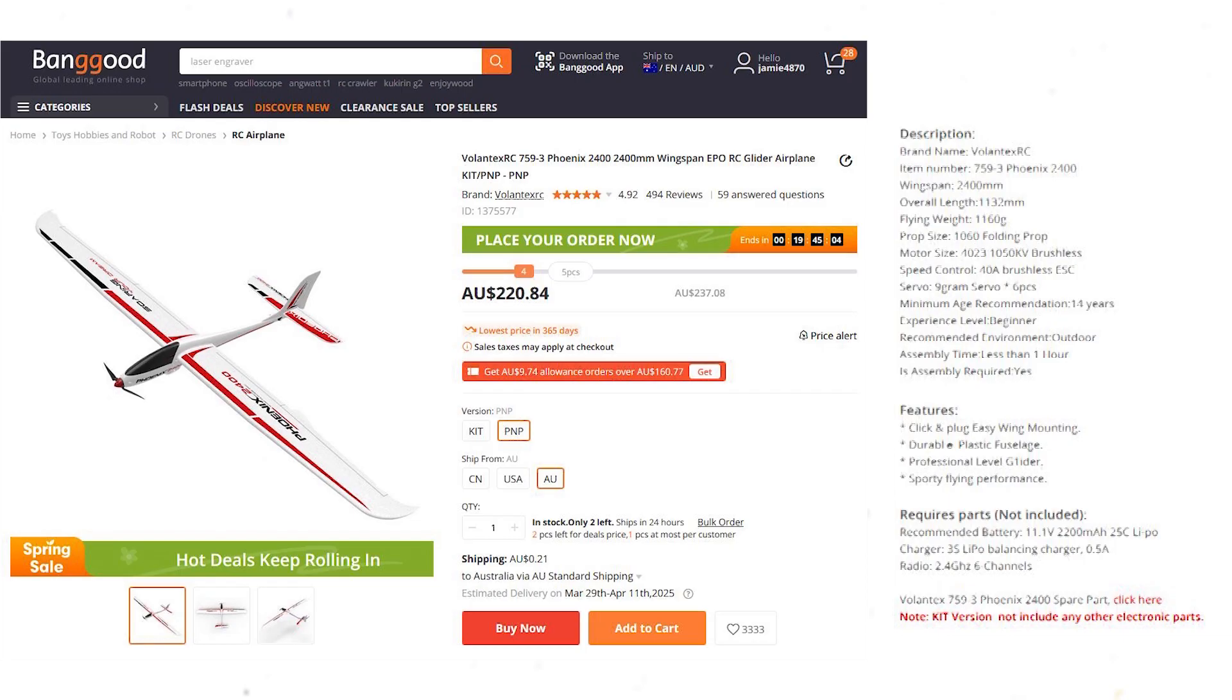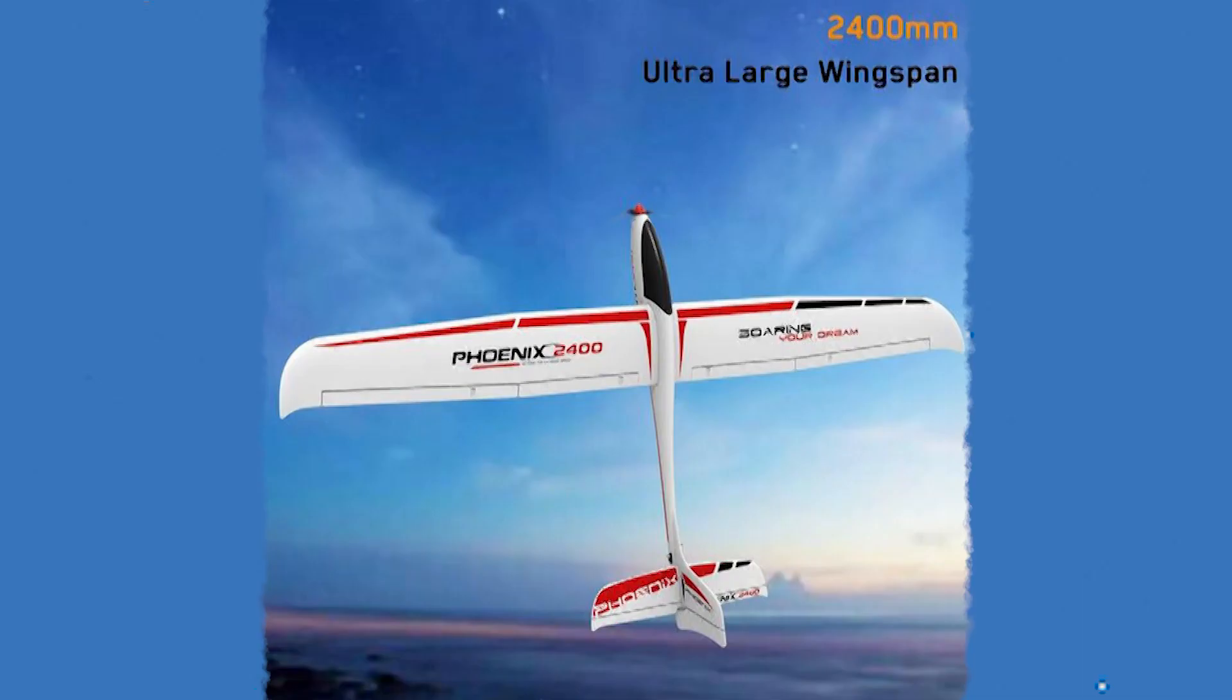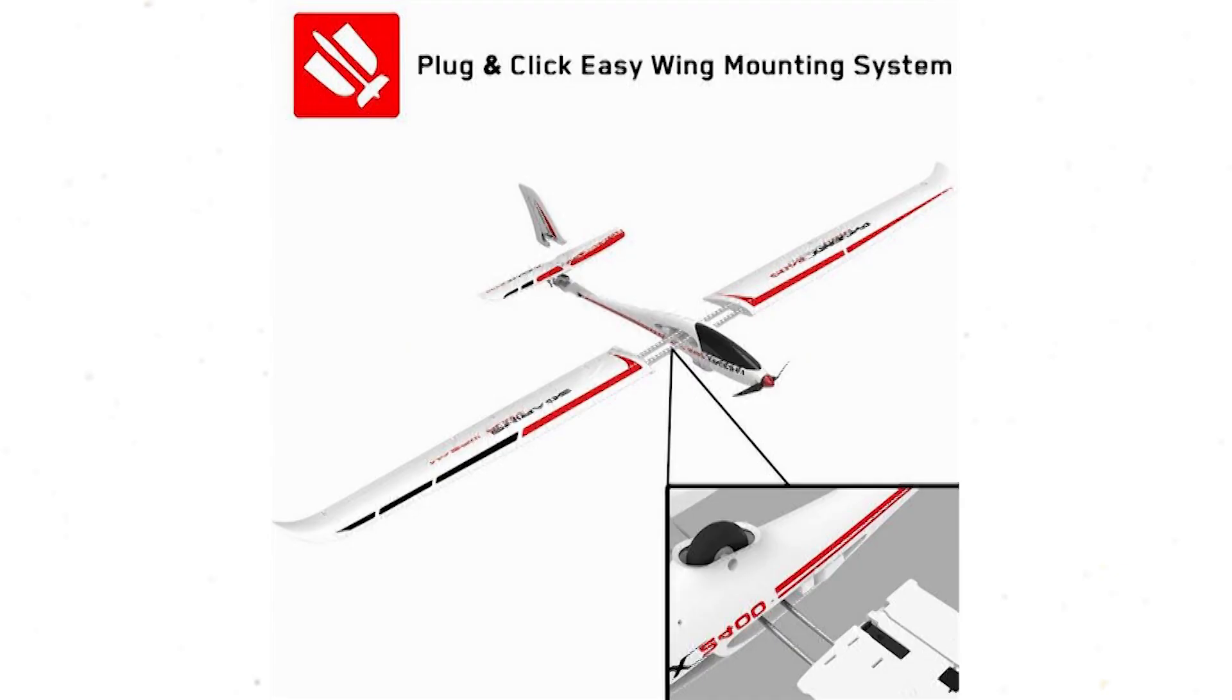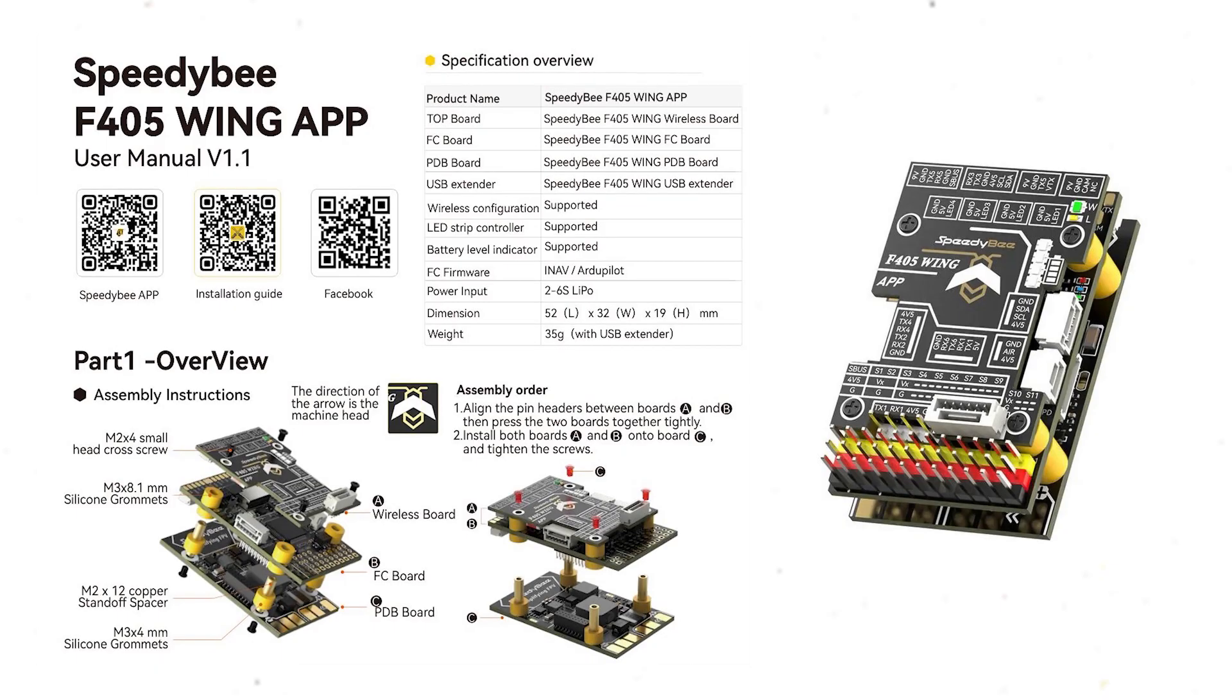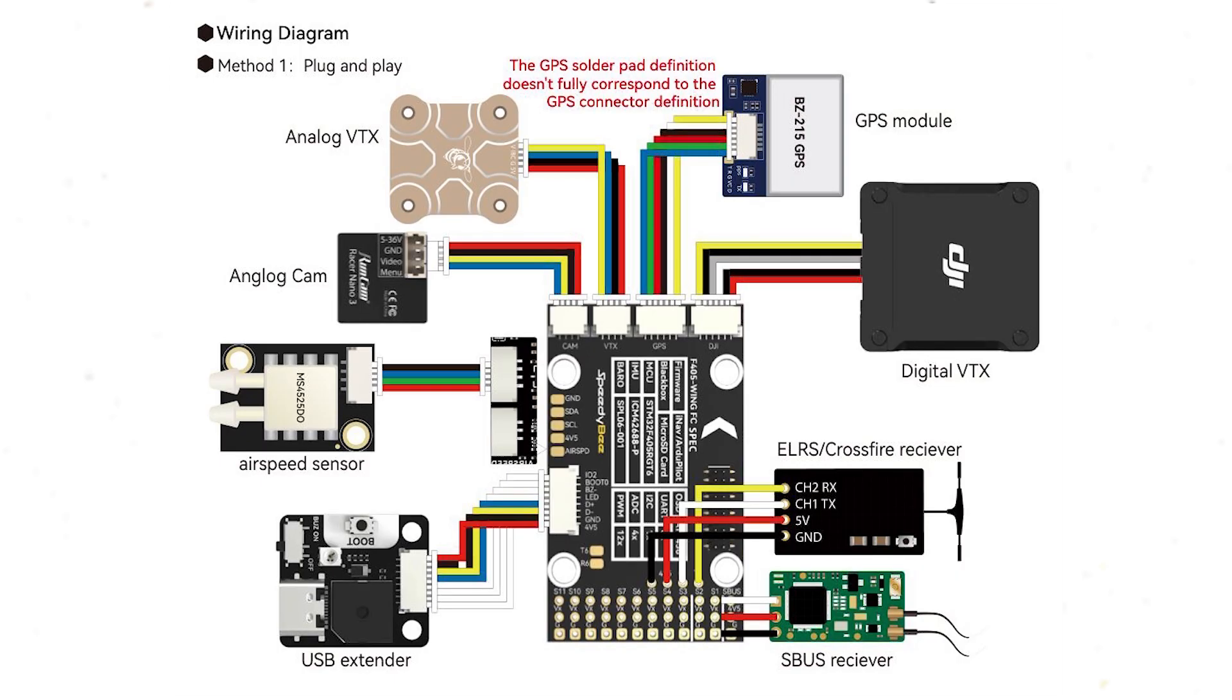I bought the PNP version. You can get it in kit version as well if you want to put your own gear in it, but I decided I'd get the PNP version that has all the servos and motor installed. ABS plastic fuselage, 2.4 meter wingspan, and it's click and plug easy assembly for the wing attachments. The plan will be to get a Speedy Bee F405 wing flight controller for it and all the other goodies that are needed to make this a good FPV platform.